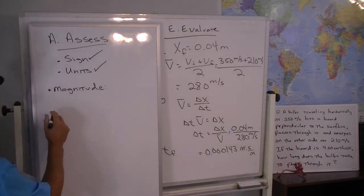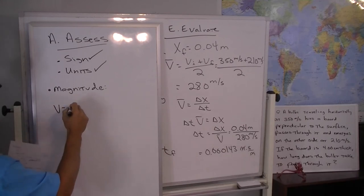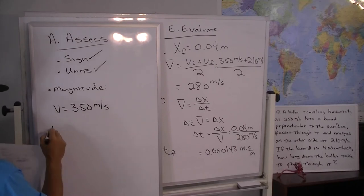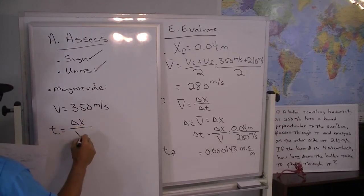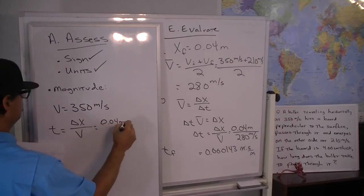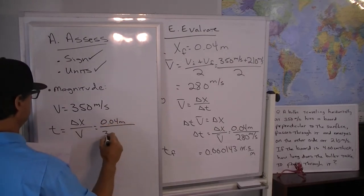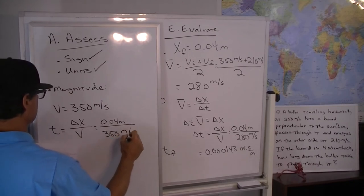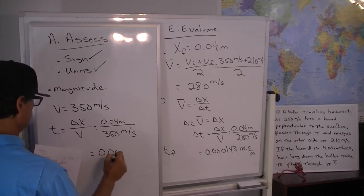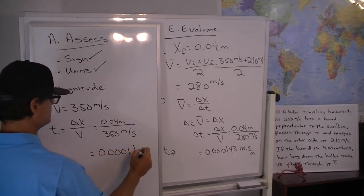So we're going to suppose if the bullet didn't slow down at all, in which case the speed the whole way through would have been 350 meters per second. And then the time had the bullet not slowed down at all would have been the same delta x but then over the 350. So that would have been 0.04 meters divided by 350 meters per second. So when you punch that into your calculator you get 0.00011 seconds.